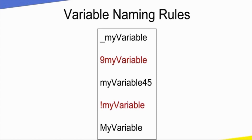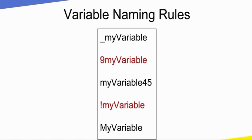Next, variable names — there are rules. Looking at the slide, there are wrong variable names and correct variable names. A variable name must start with an underscore, a capital letter, or a small letter. We cannot start with a number or a special character like an exclamation mark. For example, my_variable_45 is correct.